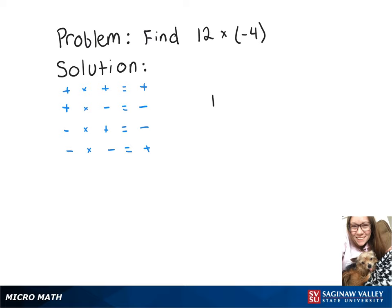So now we're doing a positive number times a negative number, so we'll get negative 48.